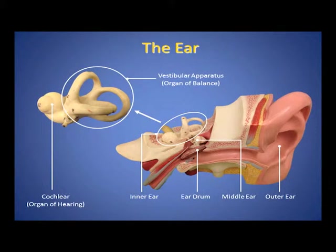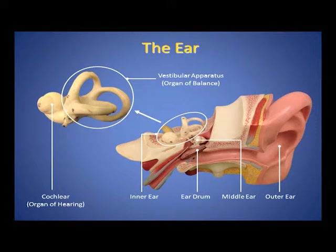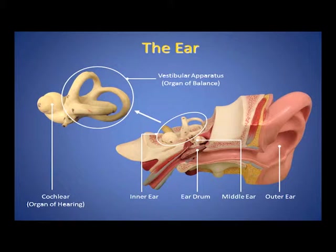The ear consists of the outer ear, middle ear and the inner ear, and the eardrum separates the outer and middle ear. In the inner ear we have the cochlea, which is the organ of hearing, and the vestibular apparatus, which is the organ of balance.